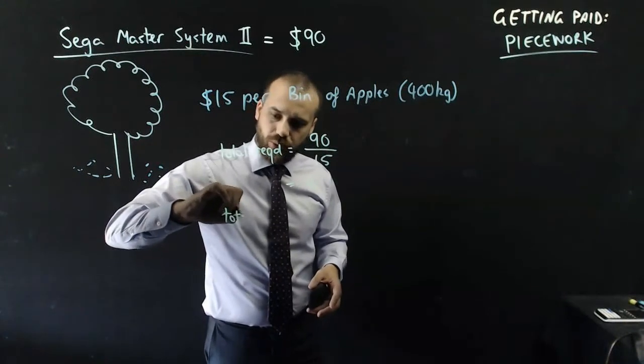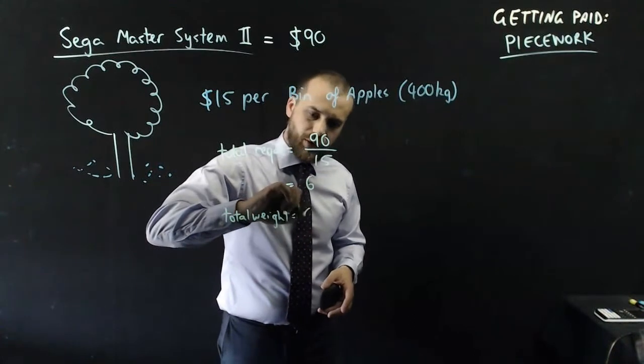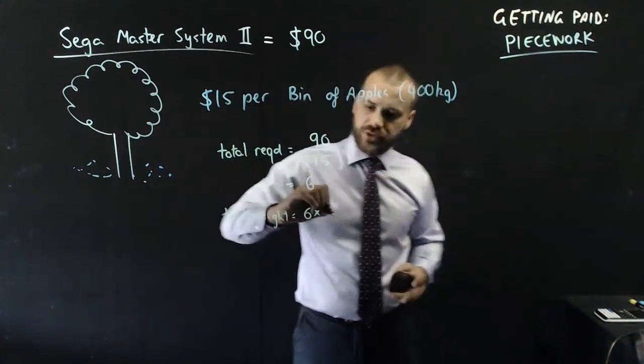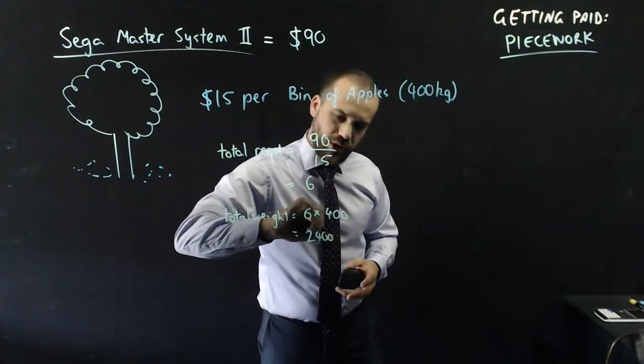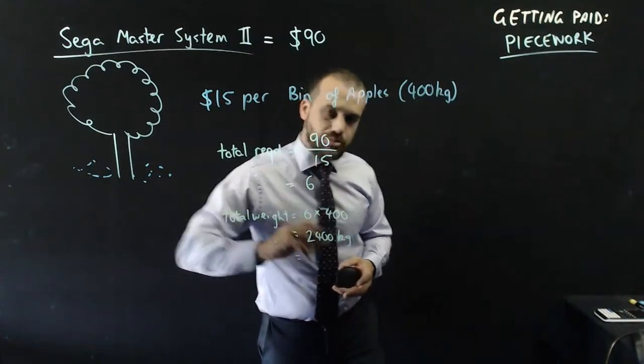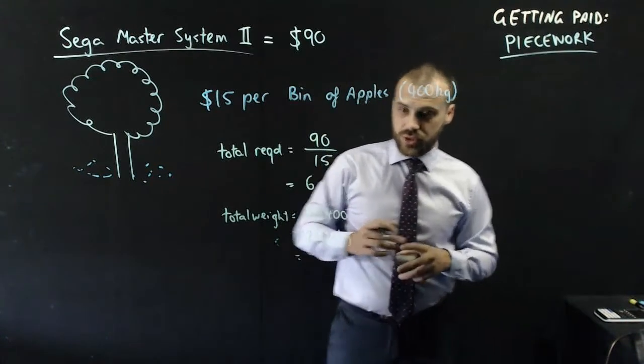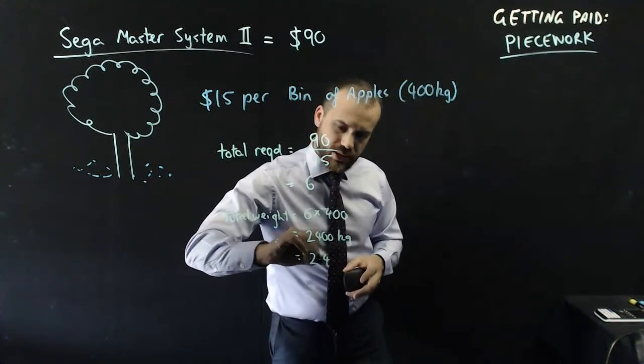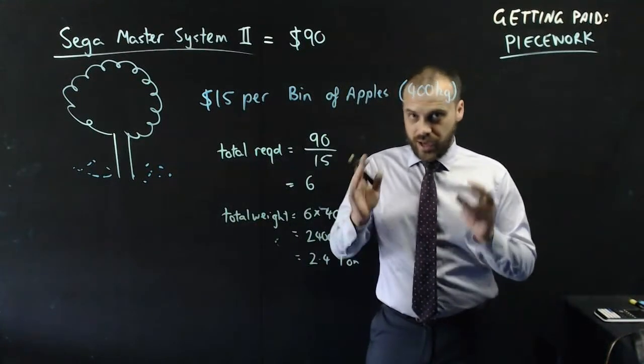So, total weight of those apples equals 6 times 400 kilograms per bin, which is 2,400 kilograms. Which means that in order to get our Sega Master System 2, my brother and I, between us, picked 2.4 tons of apples.